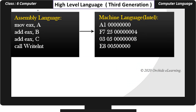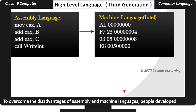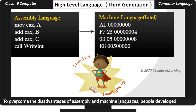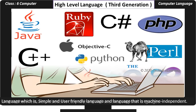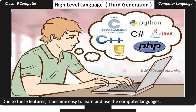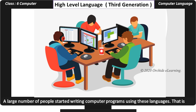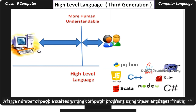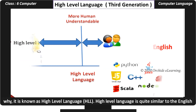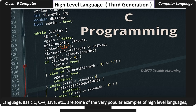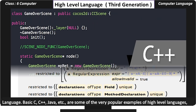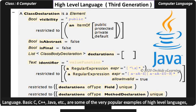High Level Language — Third Generation. To overcome the disadvantages of assembly and machine languages, people developed a language that is simple, user friendly, and machine independent. Due to these features, it became easy to learn and use computer languages, and a large number of people started writing computer programs using these languages. That is why it is known as high level language. A high level language is quite similar to the English language. Basic, C, C++, Java, etc. are some very popular examples of high level languages.